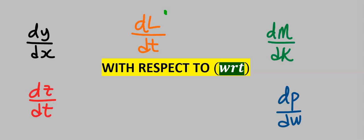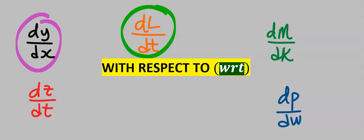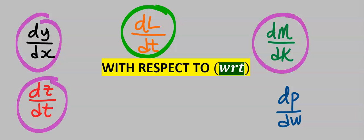In calculus, we differentiate a function respecting two or more variables in that function. For example, I might decide to differentiate the life cycle of a virus with respect to time. Generally, we use y and x. However, it can be z, t, m, k, p, or w.